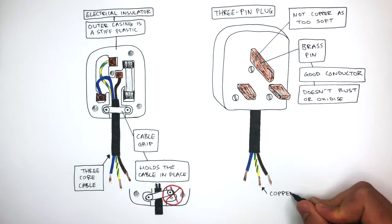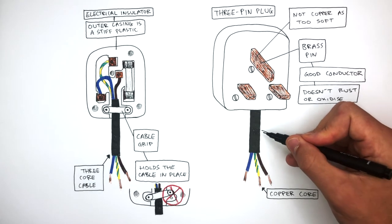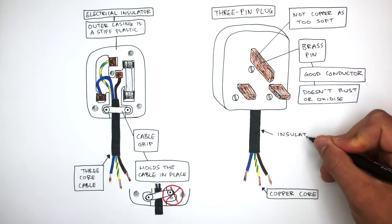We already know this is the copper core. Copper is used because it is ductile and a very good electrical conductor. And remember, this outer plastic covering has another name. It is also known as the insulating sheath.